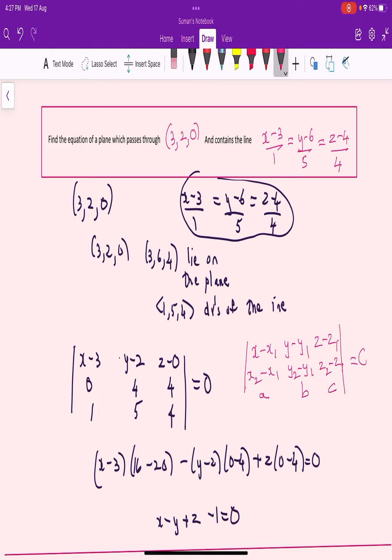This 3 by 3 determinant equated to 0. So I get (x-3), (y-2), (z-0). Subtracting the two points gives (0, 4, 4), and (1, 5, 4) is the direction ratios of the normal.